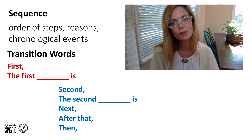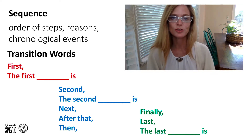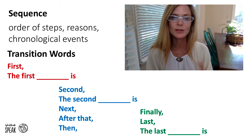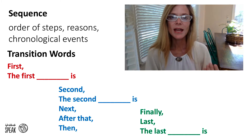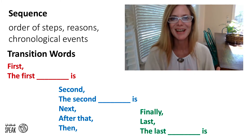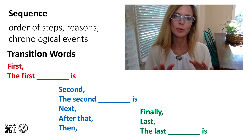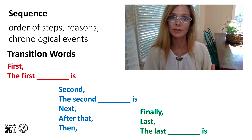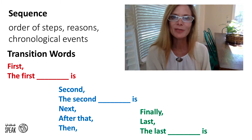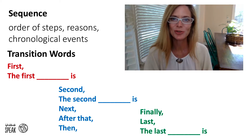And then after those, we use transition words like 'Finally,' with a comma, 'Last,' with a comma, and 'The last step is,' 'the last example is,' 'the last reason is.' You can take a moment to pause this video and write these down so that you have them close by when you begin writing in English.